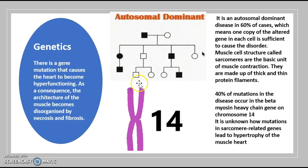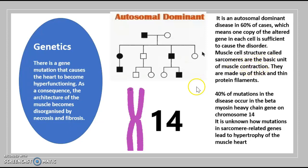Moving on to the genetic side of this disease: there is a gene mutation that causes the heart to become hyperfunctioning. As a consequence, the architecture of the muscle becomes disorganized by necrosis and fibrosis. It is an autosomal dominant disease in 60% of cases, meaning one copy of the altered gene in each cell is sufficient to cause the disorder. Sarcomeres — the basic unit of muscle construction — are made up of thick and thin protein filaments. 40% of mutations in the disease occur in the beta-myosin heavy chain gene on chromosome 14.